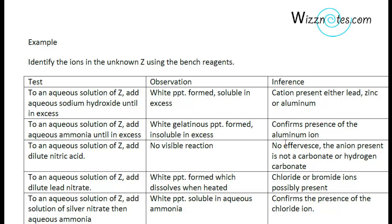So we know that the aluminum ion is present and we know that the chloride ion is present. That means that the unknown Z must be aluminum chloride.